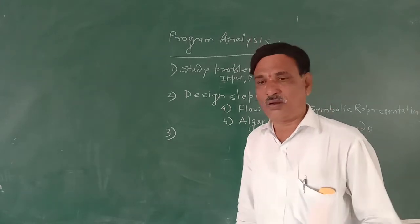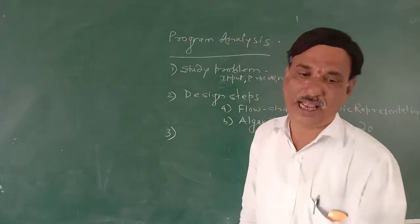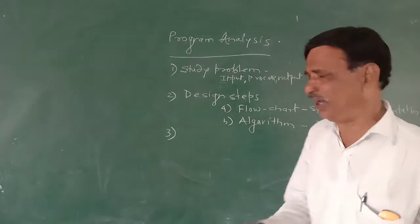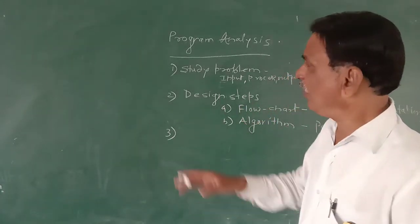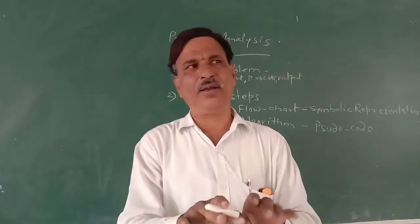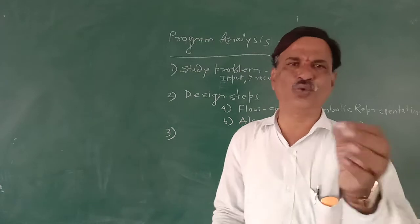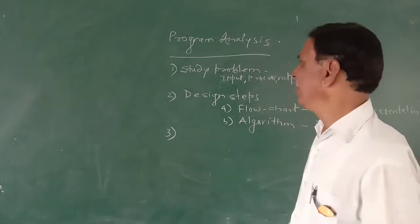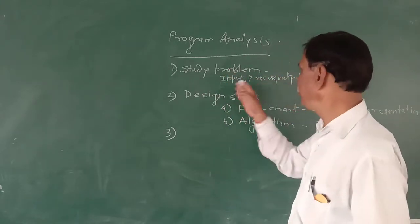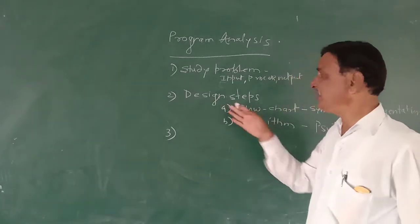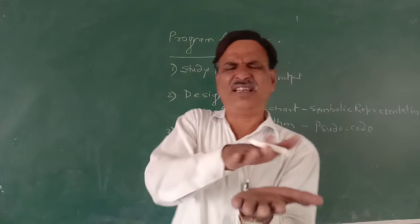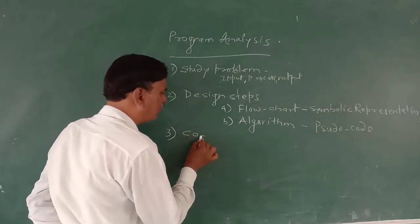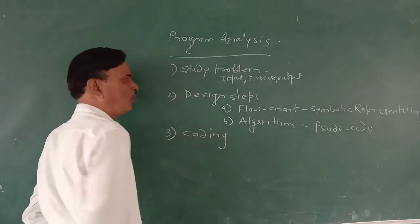These are the two steps which are prior to actual programming on the computer: studying the problem and understanding it, then writing down the steps in our language - that is, drawing a flowchart or writing an algorithm. Once these two steps are over, we are ready to write a program in C++ or any language we know. Problem study gives input, process, output. Then design steps are written in simplest form.